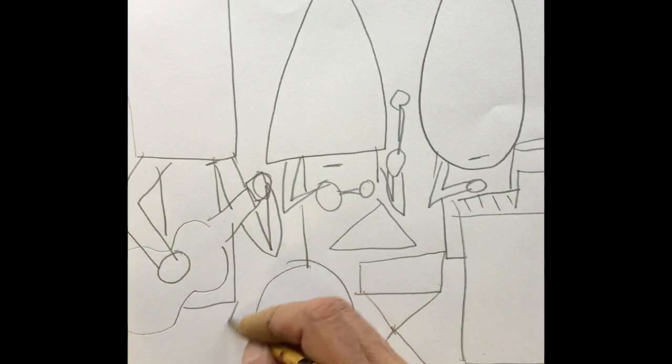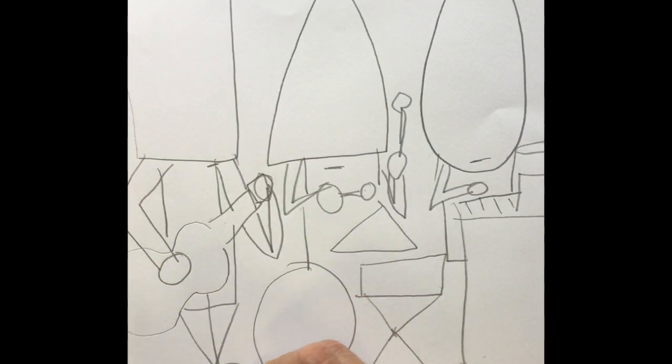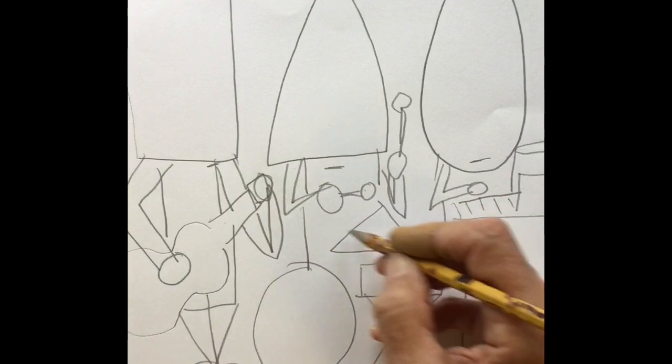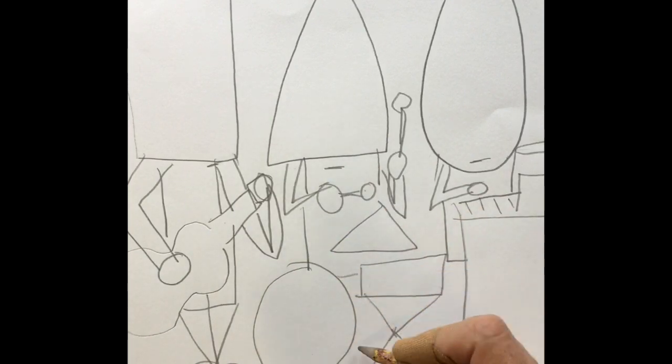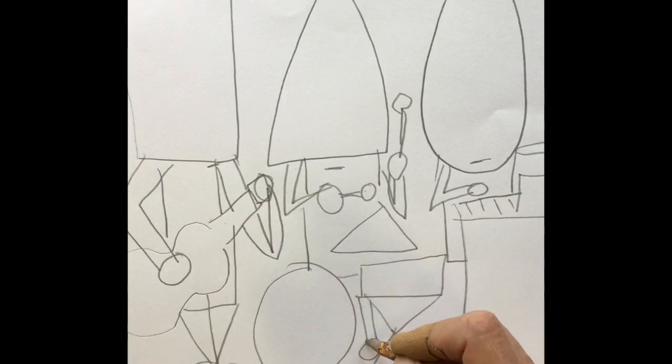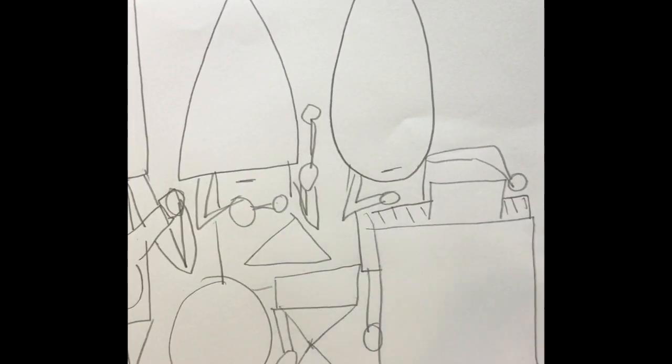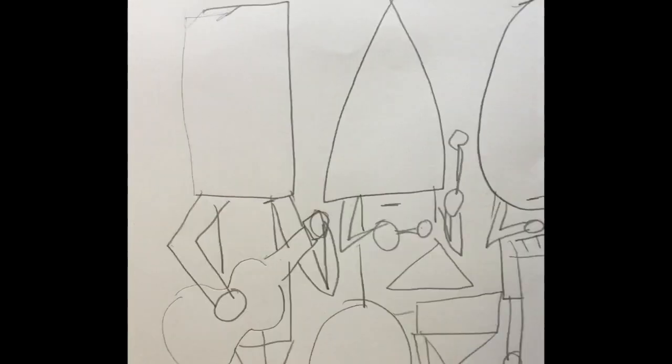Now I'm going to make some shapes down to the bottom to show their legs. He's got triangle shaped legs. He'll have just a rectangle shaped leg and maybe he'll have an oval for his foot. And this one we're just going to see one of his feet because the other is hiding behind the piano.